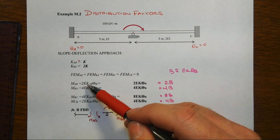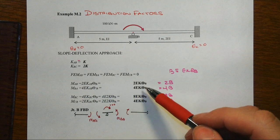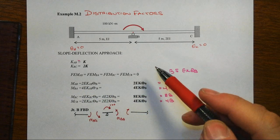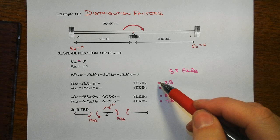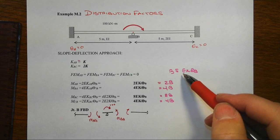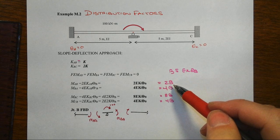So there's your MAB equaling 2EKAB theta B, and then substitute in, we get 2EK theta B, and for later shorthand, let's just let B be defined as EK theta B so that we can just write that simply as 2B.